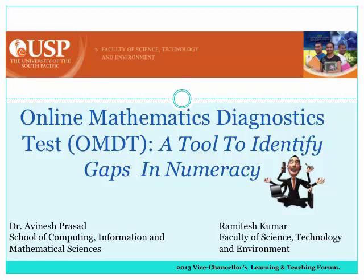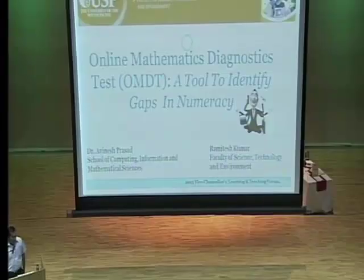OMDT is a tool to identify gaps in learning. This is an online test given to all first year science students, but it is not limited to science students only. Even the social science and business students can also do this online test.